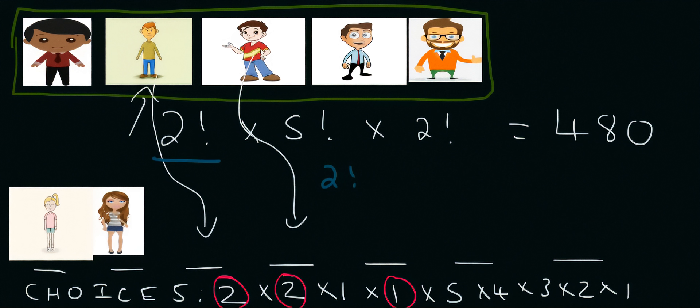Then this part over... let me do that in a different color. This part here was the number of choices within the girls unit. Okay, so that's this part over here. And then the five, four, three, two, one—that's the number of choices within the boys unit, and that's that part over there. So in summary...